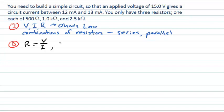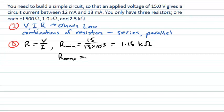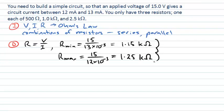We can calculate the minimum resistance we would need: 15 volts divided by the largest current, which is 13 milliamps (13 × 10⁻³ A), giving us about 1.15 kilo ohms. Similarly, the largest resistance would be 15 volts divided by the smallest current of 12 milliamps, which gives us 1.25 kilo ohms. So we need a resistance somewhere between 1.15 kΩ and 1.25 kΩ.